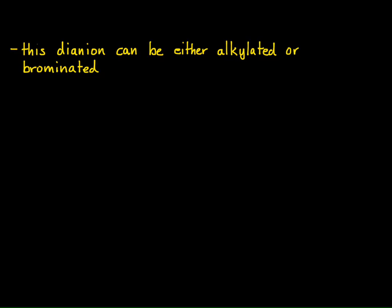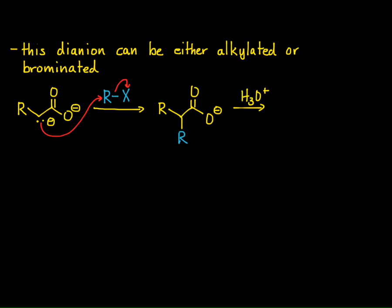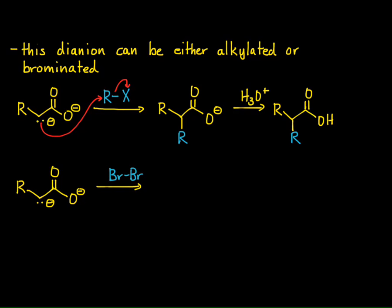We can also brominate it if we want to. If we take this dianion — the enolate-carboxylate — and react it with an alkyl halide in an SN2-type substitution, we get alkylation of the alpha carbon of our carboxylic acid. Of course it's a carboxylate still, so we can treat that with acid to protonate and get the carboxylic acid. We can do this with bromine as well, which is another way to brominate a carboxylic acid at the alpha position.